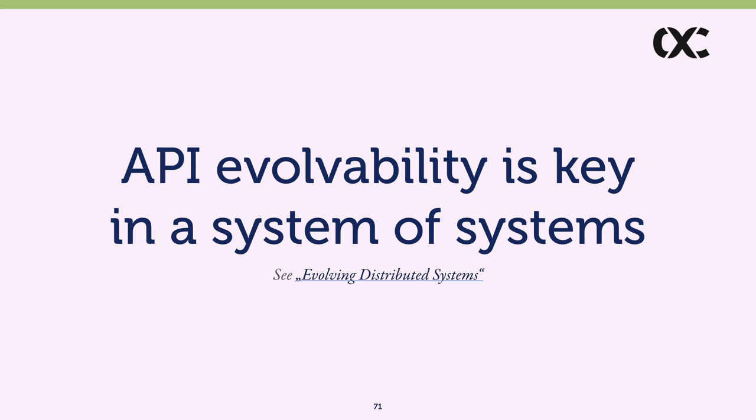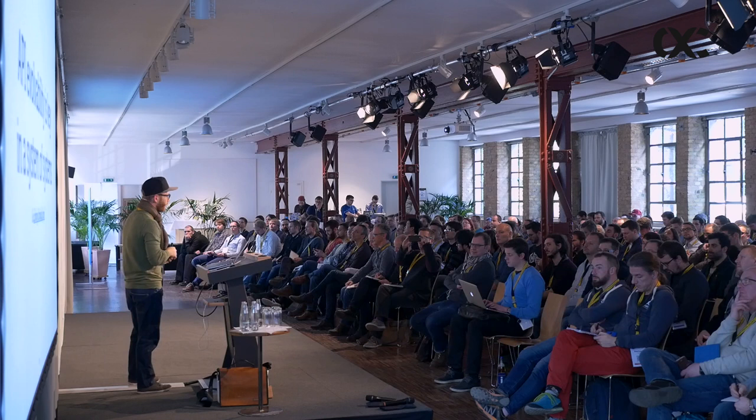This matters even more in systems of systems. In a microservices scenario, if every little change to one API requires redeploying 15 or 20 other systems, you lose the ability to continuously deploy new features. You want to focus on making changes in a non-breaking way — and hypermedia-based approaches help a lot. There's a blog post called 'Evolving Distributed Systems' — search my name and that title — where I elaborate on this.